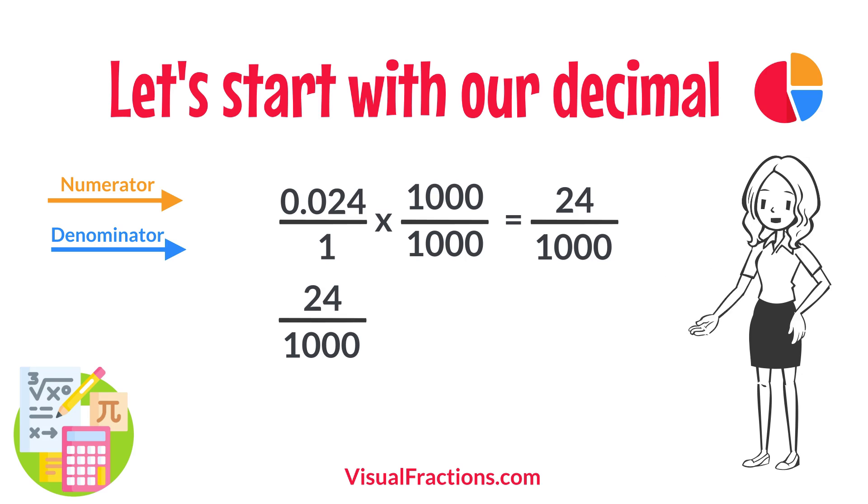Next, we simplify. Both the numerator and the denominator in 24 1,000ths can be divided by 4, the greatest common divisor. Divide 24 by 4 to get 6, and divide 1,000 by 4 to get 250.